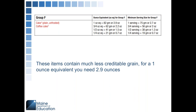Items in Group F contain a lot less creditable grain than the others. These are cakes and coffee cakes — you don't see them quite as often, but they are a nice occasional treat for the kids. To get a one ounce equivalent grain, you need 2.9 ounces per serving.